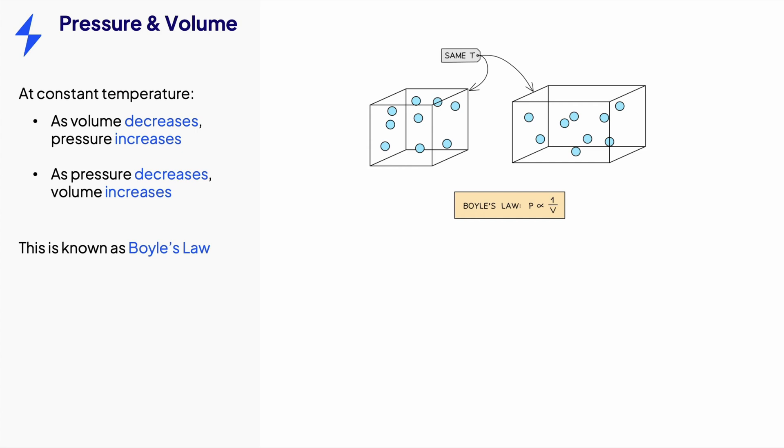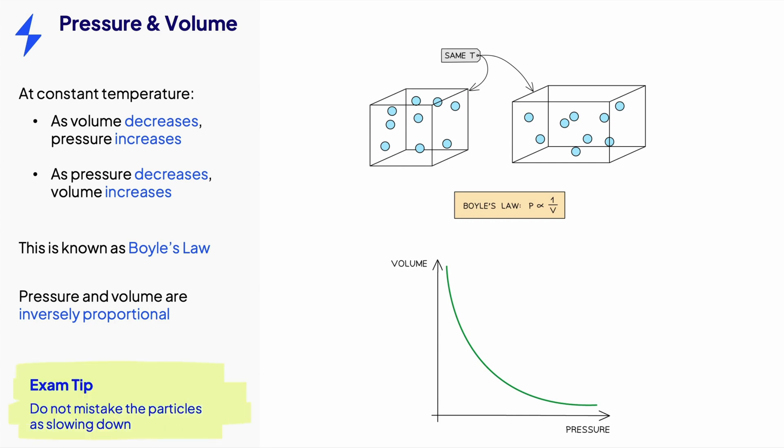This is known as Boyle's law. This means pressure and volume are inversely proportional, and can be shown on a graph with a curve like this. Remember, the particles do not slow down as the volume increases. Only the temperature of the gas can change the speed of the particles.